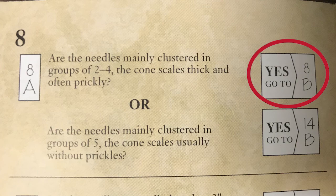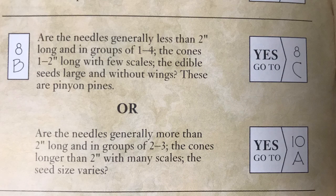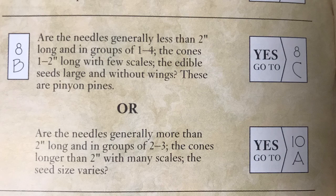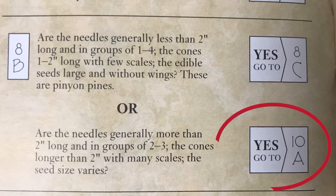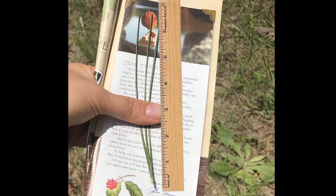Let's move to 8B. 8B: Are the needles generally less than 2 inches long and in groups of 1 to 4, the cones 1 to 2 inches long with few scales? The edible seeds large and without wings? These are pinyon pines. Or are the needles generally more than 2 inches long and in groups of 2 to 3, the cones longer than 2 inches with many scales? The seed size varies? The needles are more than 2 inches long and in groups of 2 to 3.